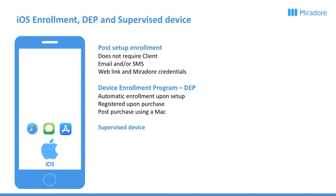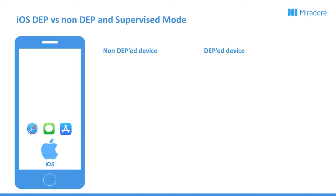Supervised device is a mode you can put an iOS device into to gain access to elevated device management features. Let's see what's possible with DEP and non-DEP devices, and what's possible with supervised and non-supervised devices, starting with DEP first. With a non-DEP device, you will have to go through the manual setup before you enrol the device, whereas if the device is DEP, it will automatically enrol and set up the device for you.